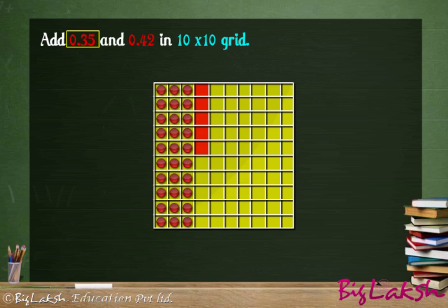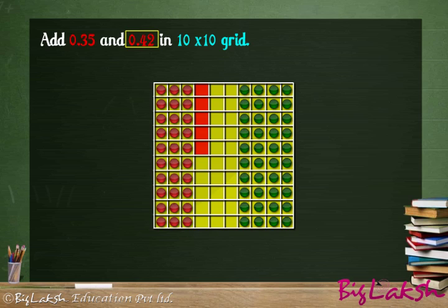Mark 0.42 in this square by shading 4 tenths and coloring 2 hundredths. The total number of tenths in the square is 7, and the total number of hundredths in the square is 7. Summing up both, we have 77 hundredths, which we express in decimals as 0.77.